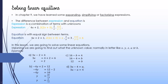For example d: if you have two unknowns, one on each side, you need to collect them on one side. Bring positive a over as minus a, and bring negative 4 over as positive 4. So 3a minus a gives 2a, because they are like terms. Then 2a equals 4, so a equals 2.